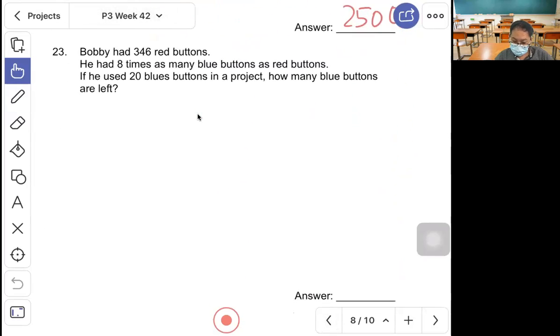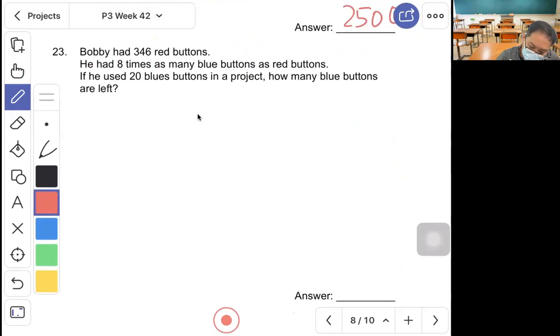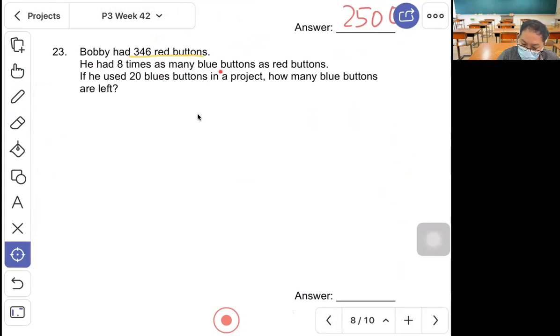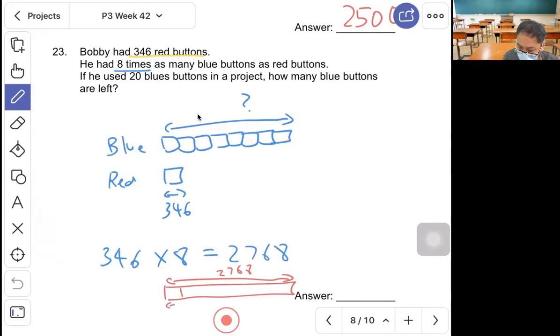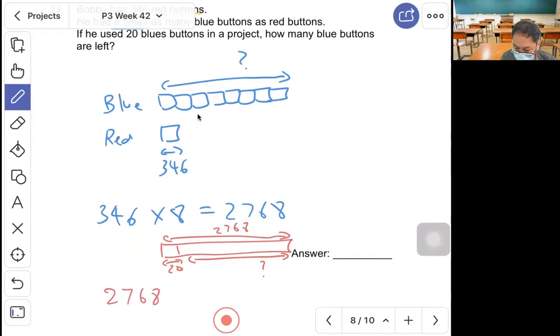Question 23, Bobby had 346 red buttons. He had 8 times as many blue buttons as red buttons. The blue is 8 units, red button is only 1 unit, which is 346. Find how many blue first: take 346 times 8, that's 2,768. He used 20 blue buttons. Take 2,768 minus 20 to find how many are left. Answer: 2,748.